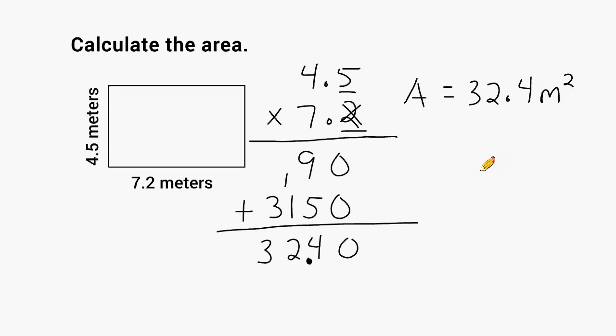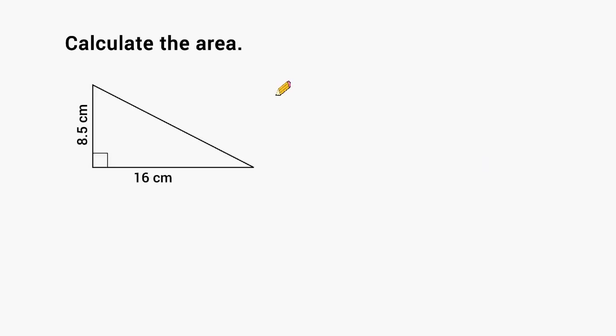Alright, let's use decimal multiplication to find the area of a triangle. One thing that we should remember about a triangle is that the area it occupies is exactly half of a rectangle.